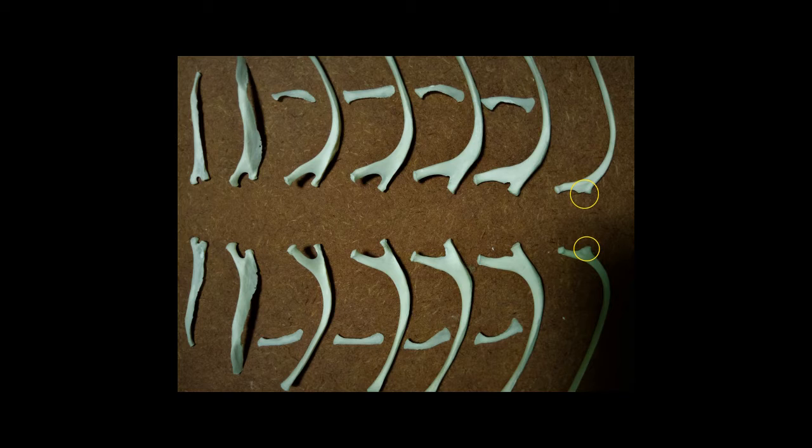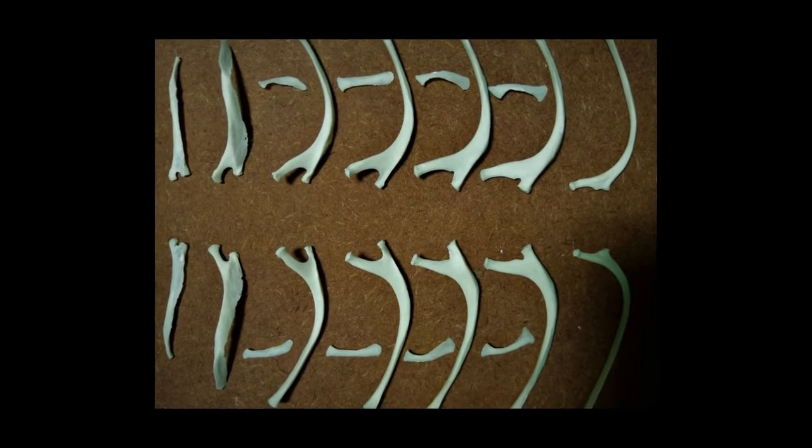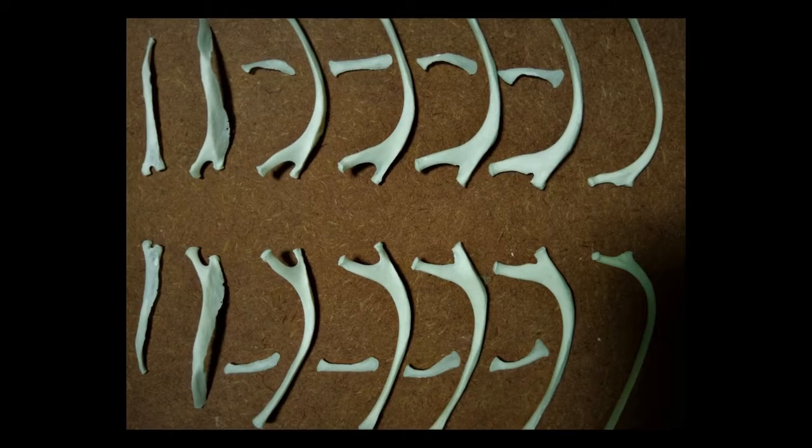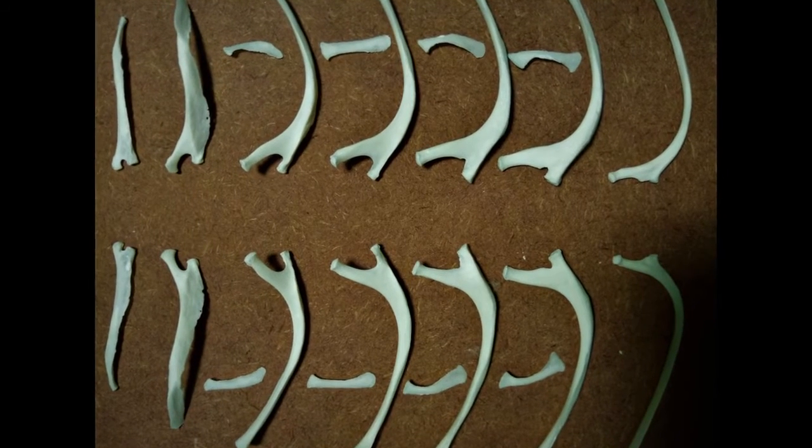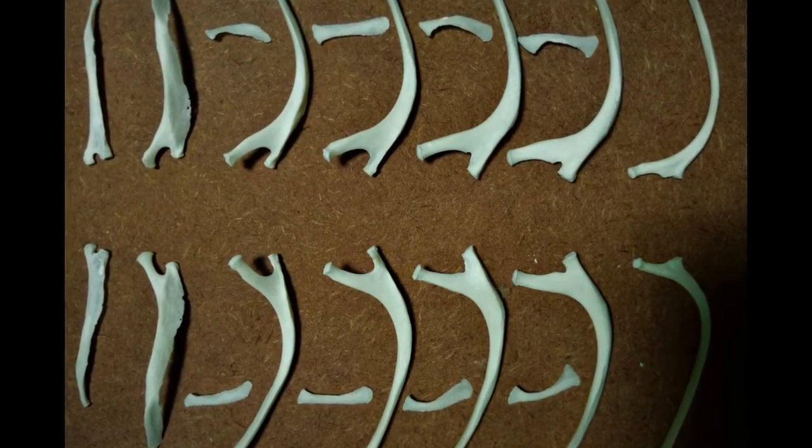The seventh rib has a very short tuberculum. The third to the sixth thoracic ribs look quite similar, but observe closely and you can see that the crescent groove between the capillum and the tuberculum becomes progressively shallower as you go from third towards the sixth rib.